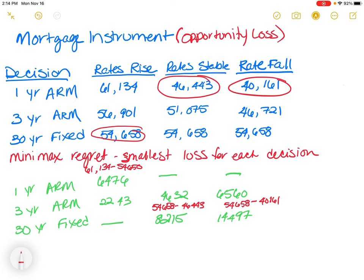Looking at the bottom of the table in green, I've recreated the table to account for the loss. For the one-year ARM, using $54,658 as our basis, you would subtract $54,658 from $61,134, giving you $6,476. Similarly, you would subtract $54,658 from $56,901, giving you $2,243. And if you subtract $54,658 from itself, that's a dash — not applicable — since it's the smallest amount.